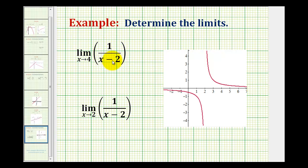Well this function is continuous except at the value of x equals two. So as we approach positive four from the left and from the right, it would be continuous on an open interval containing four. Therefore we could determine this limit by performing direct substitution. By replacing x with four, we'll have one over four minus two, which is equal to one-half.